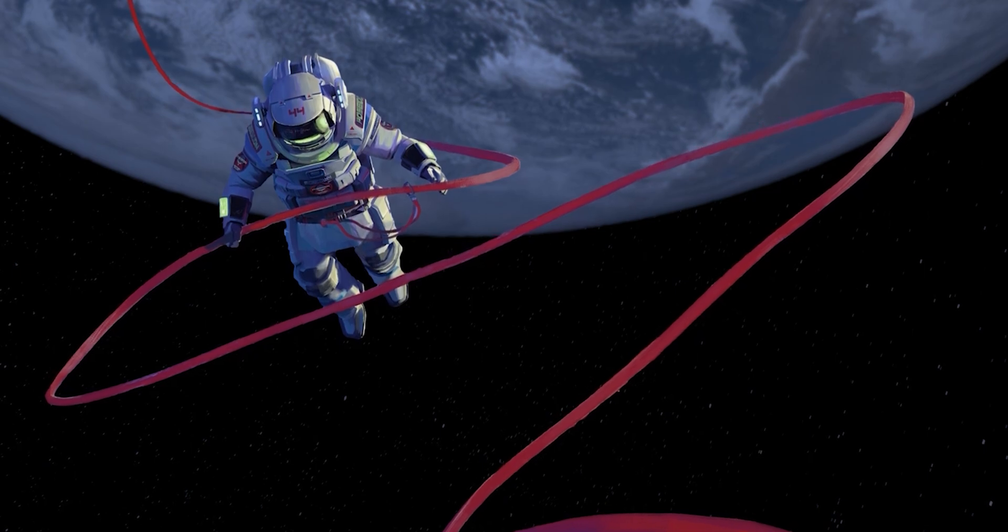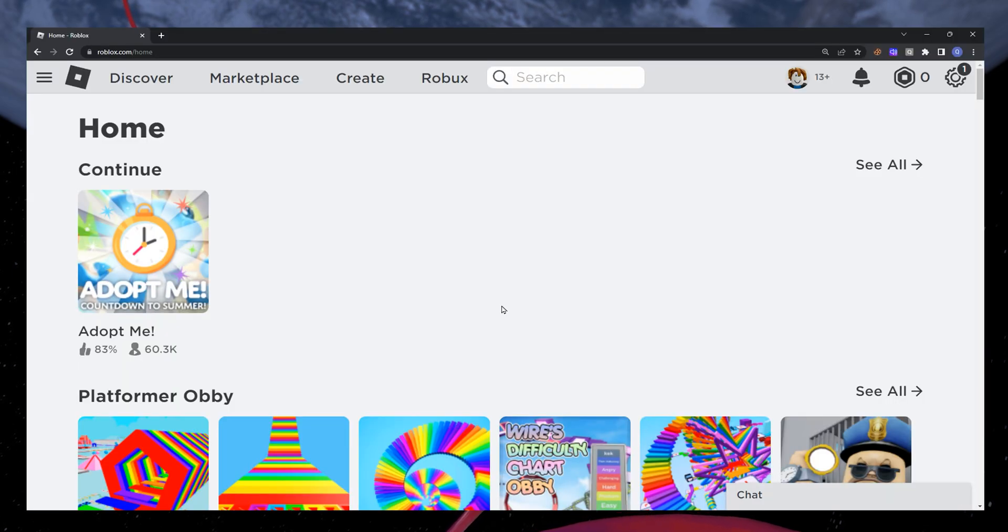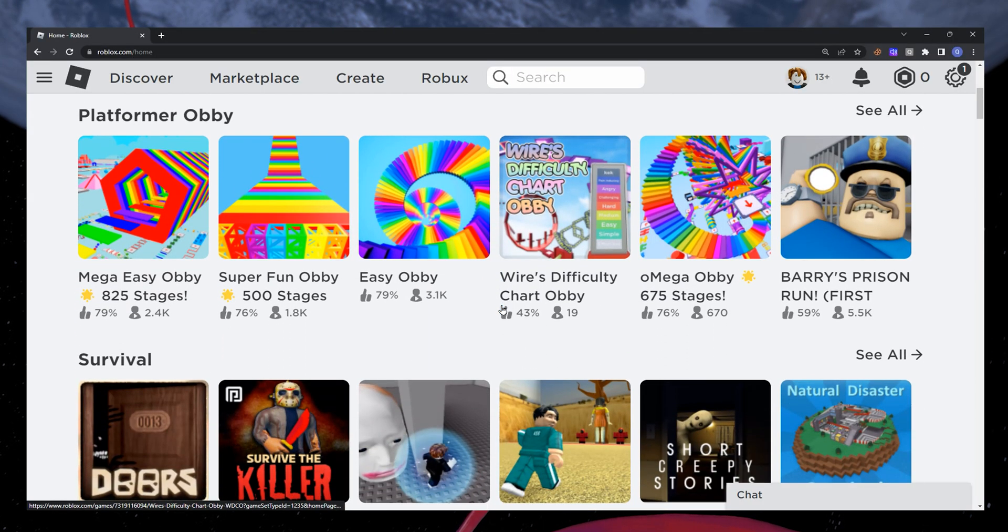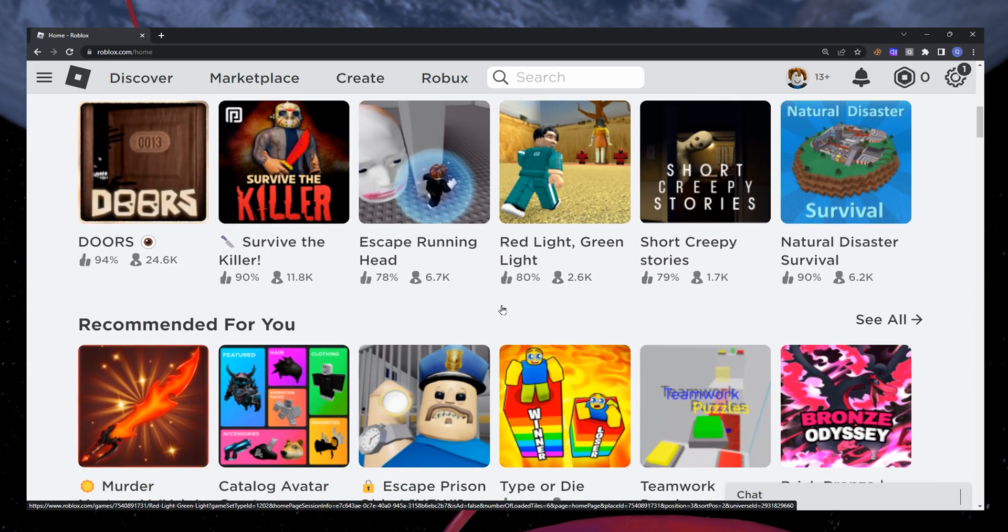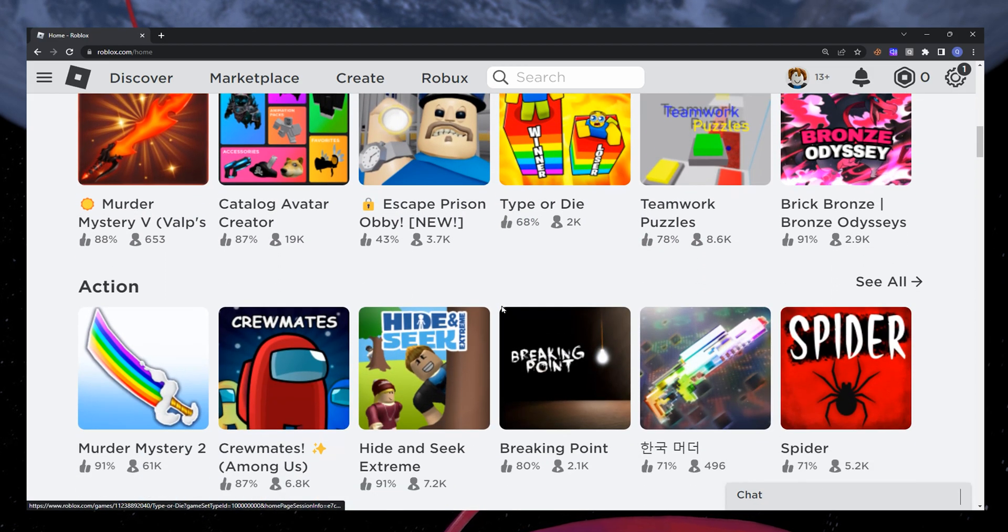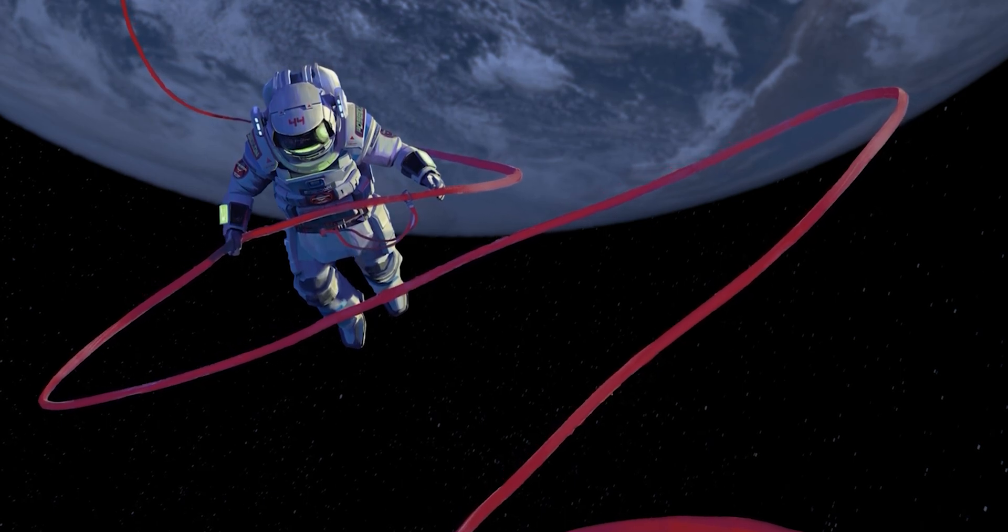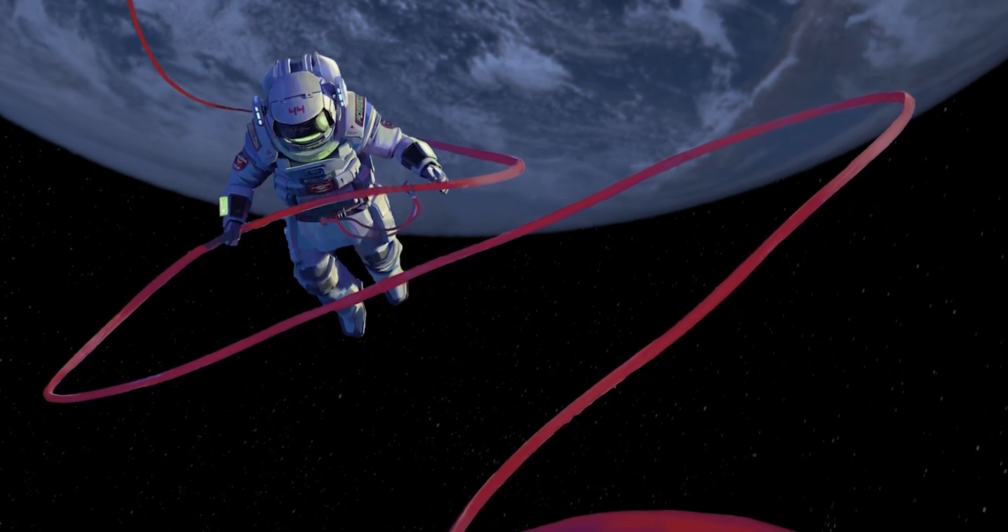Head to roblox.com and proceed to play any Roblox experience. The website will try to launch Roblox and install all the missing files we just deleted. This should fix the Failed to find Roblox process error you are getting.